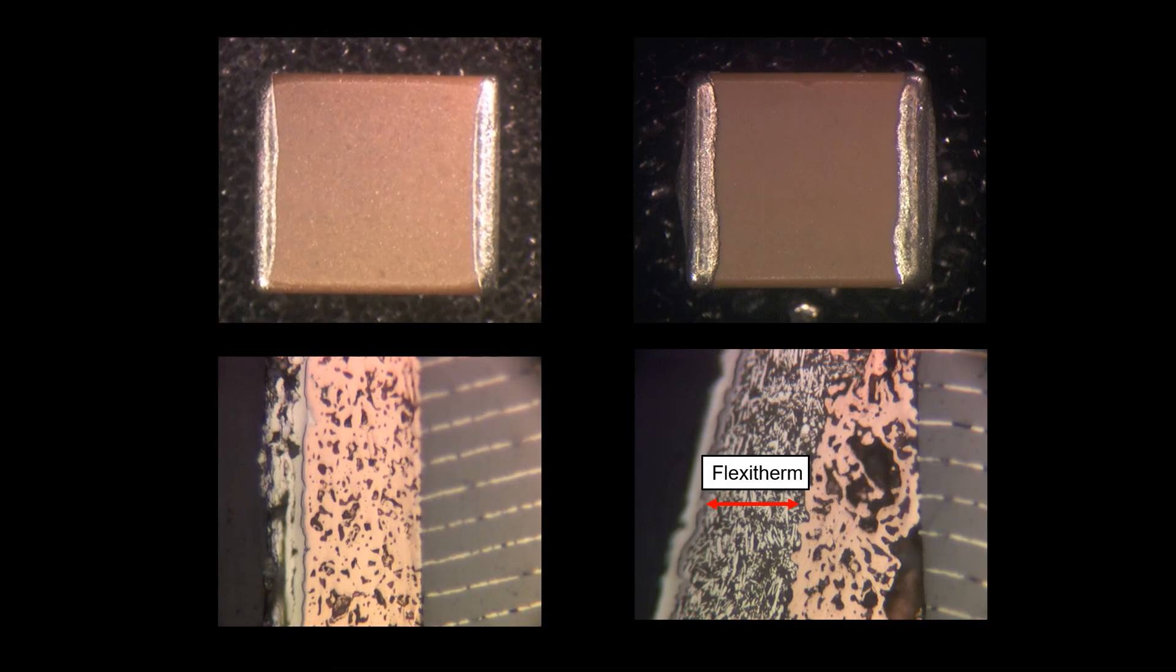These are cross sections of two MLCC capacitors. The cap on the right is a genuine flexi-therm. The cap on the left was marketed as a flexi-therm. We can see under a microscope that the one on the left is missing the flexi-therm layer.